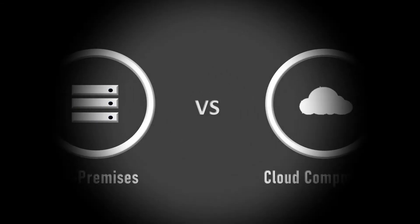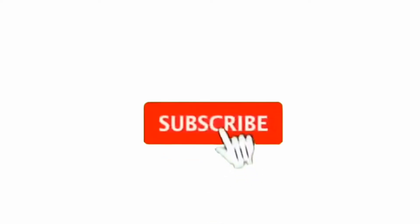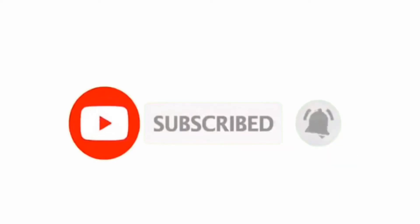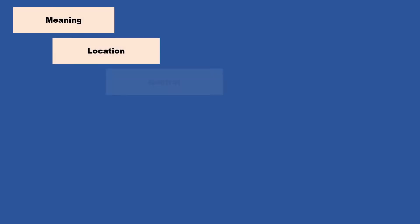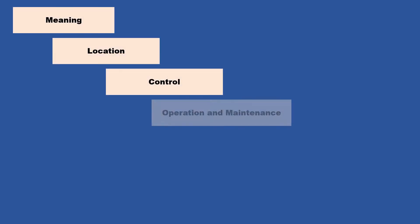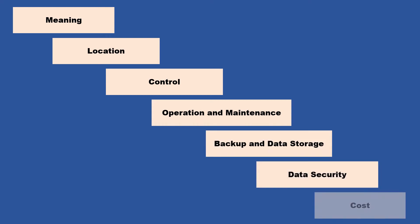Welcome back. In today's video we'll be talking about the two architectures: the on-premise architecture and the cloud computing architecture. We'll start off by talking about the meanings of the two terms, then the location of the systems, how the systems are being controlled, operation and maintenance, backup and data storage ability, data security, and finally the cost needed to implement these two systems.